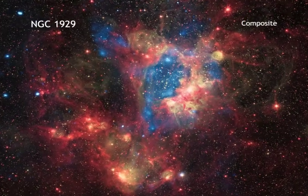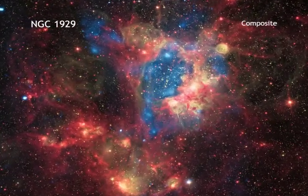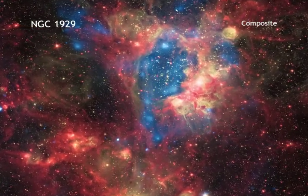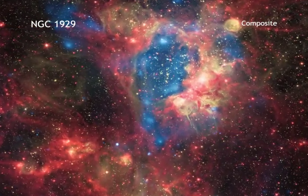The star cluster, known as NGC 1929, is embedded in a cloud of gas and dust, which astronomers call the N44 Nebula.